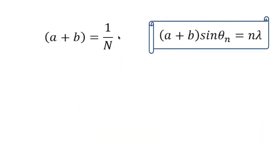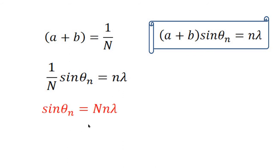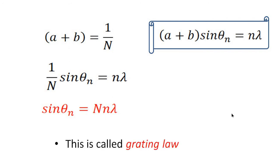We have the equation (a + b) = 1/N, and also the equation (a + b) sin theta_n = n lambda. Substituting 1/N for (a + b), we get (1/N) sin theta_n = n lambda, or sin theta_n = nN lambda. This is called the grating law.